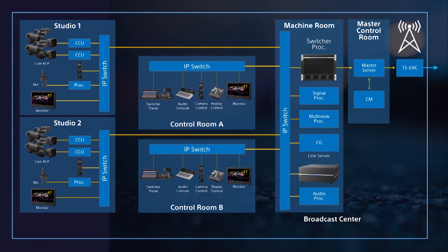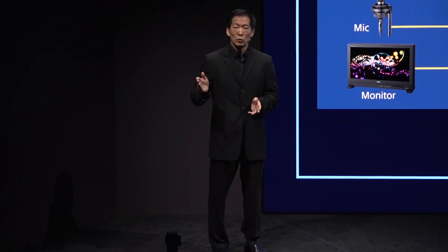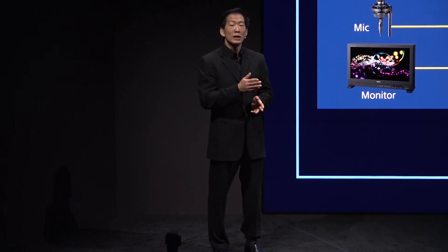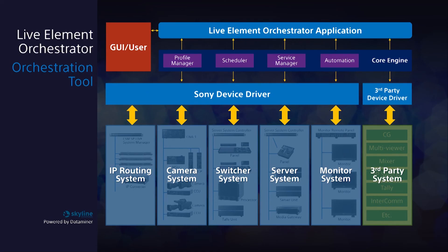With Live Element Orchestrator, you can set up new studio configurations on demand — so Studio 1 can talk with Control Room B and Studio 2 can talk with Control Room A. You can save all your new settings, and when you're done, instantly restore your previous settings, bringing operations back to normal with a single mouse click. Live Element Orchestrator is the extremely powerful, extremely capable solution that helps you unleash the full power of IP Live.